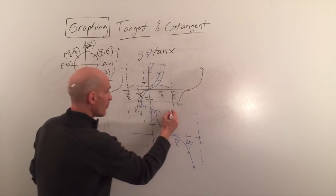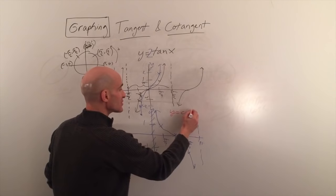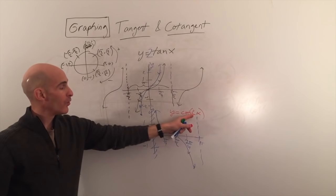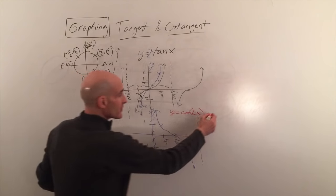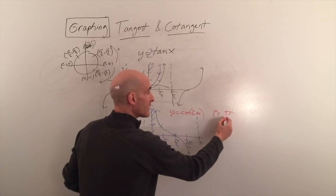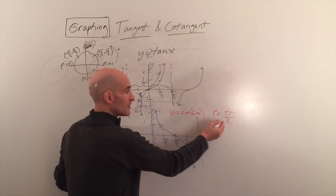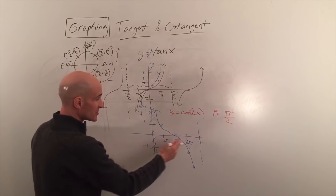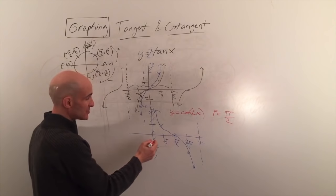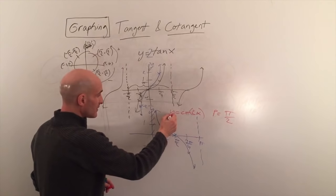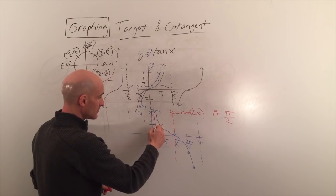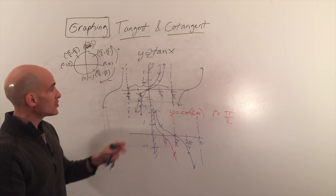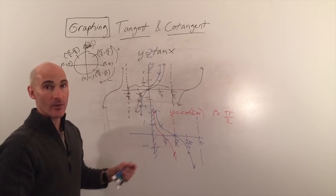For y equals cotangent of 2x, the period formula is pi divided by b, where b equals 2, giving a period of pi over 2. The 2 compresses the graph horizontally, completing one cycle in pi over 2. You can also shift the graph left, right, up, and down.